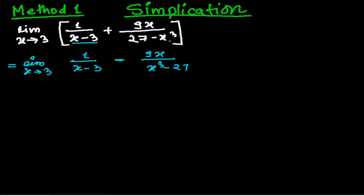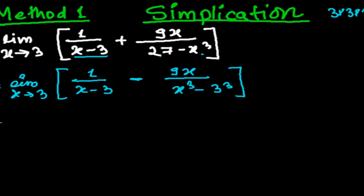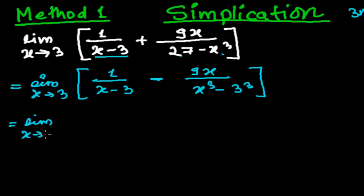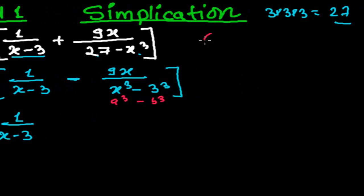Now x cubed is negative but 27 is in positive form. You know, 27 I can directly write as minus 3 cubed, because 27 equals 3 cubed — 3 times 3 times 3: 3 times 3 is 9, 9 times 3 is 27. So now we have limit x tends to 3, 1 upon x minus 3, and it is in the form of a cubed minus b cubed.